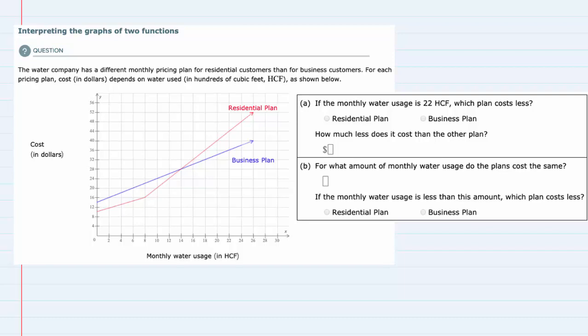In this video I'll be helping you with the ALEKS topic called Interpreting the Graphs of Two Functions. Reading the situation, we have two graphs, red and blue. The description says the water company has a different monthly pricing plan for residential customers than for business customers. For each pricing plan, cost in dollars depends on water used in hundreds of cubic feet, as shown below.